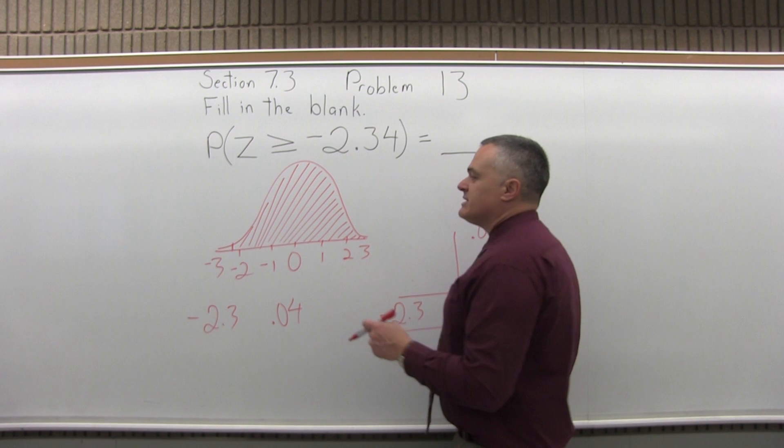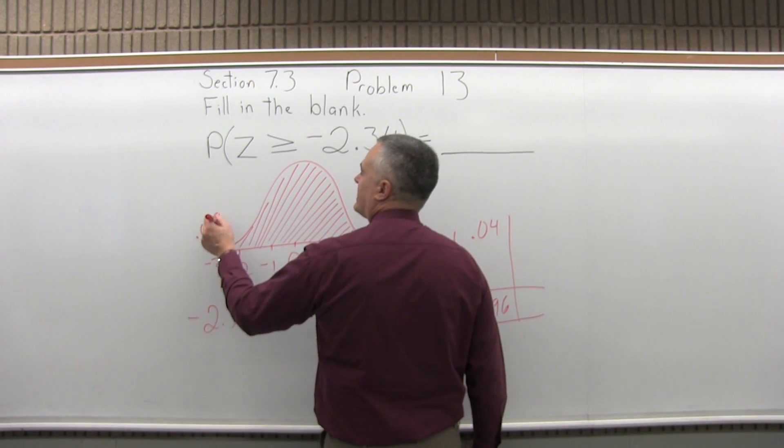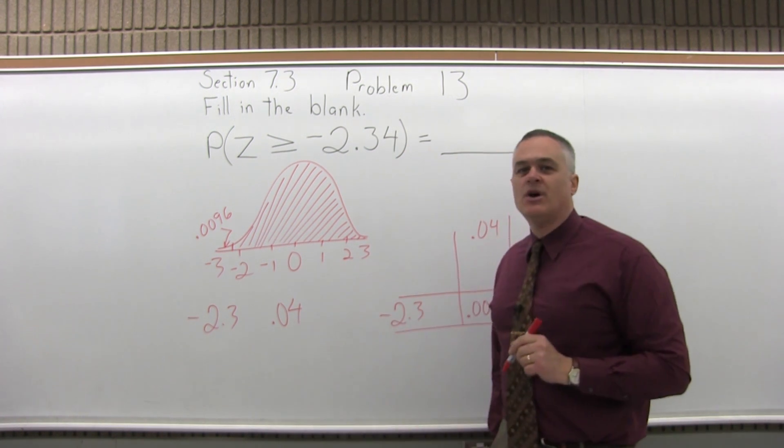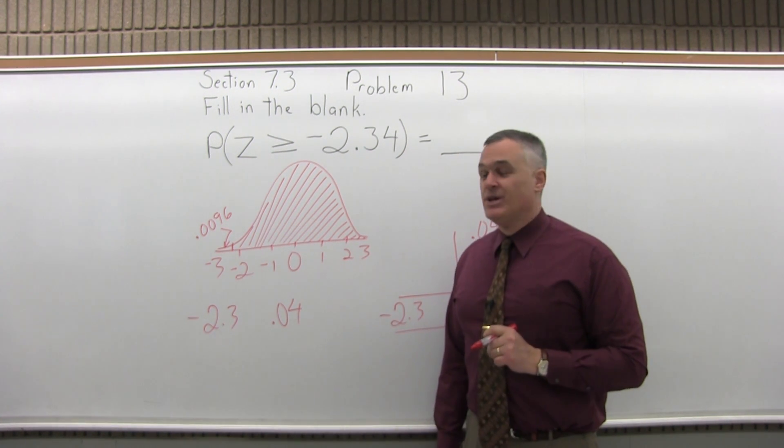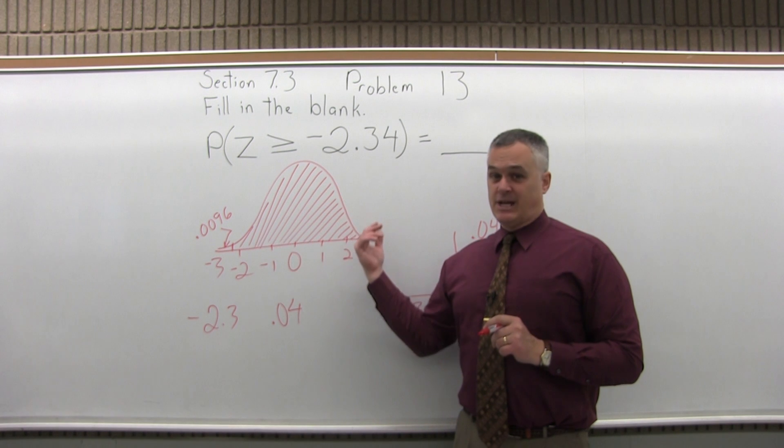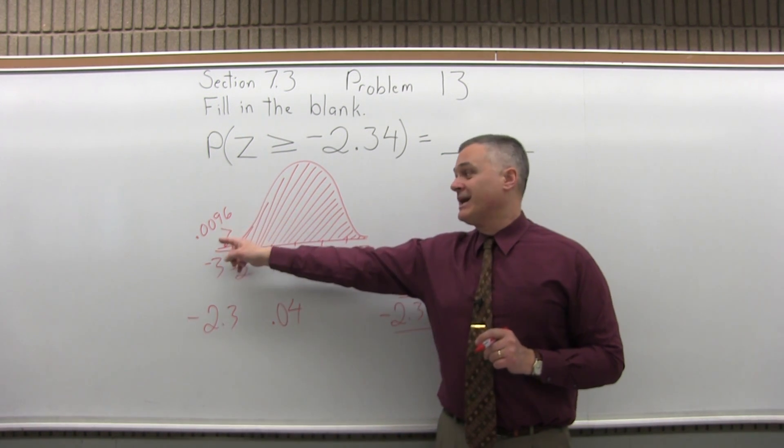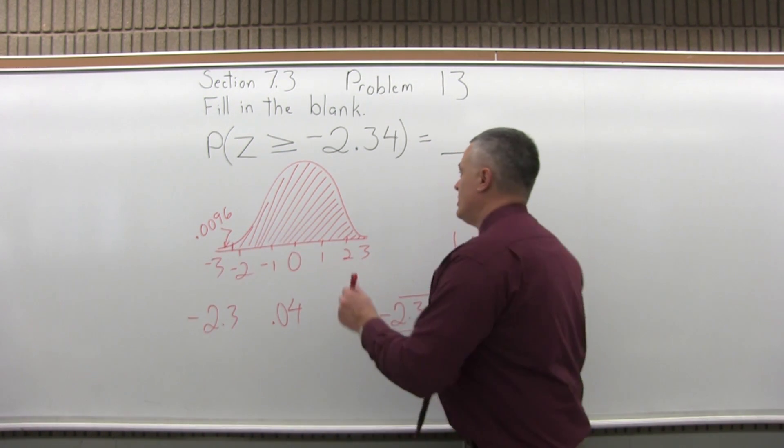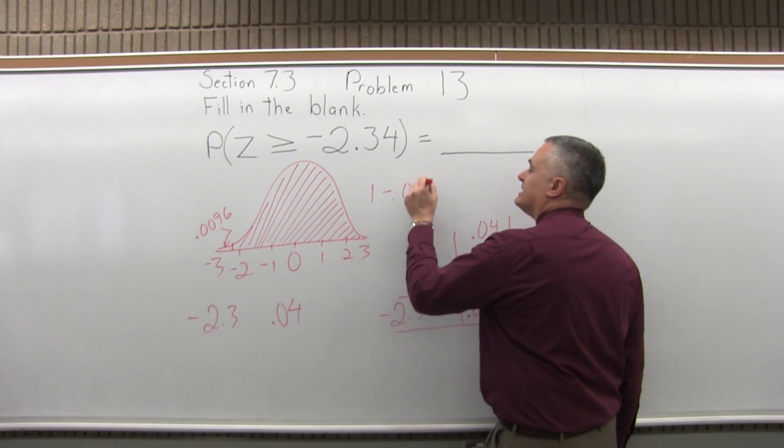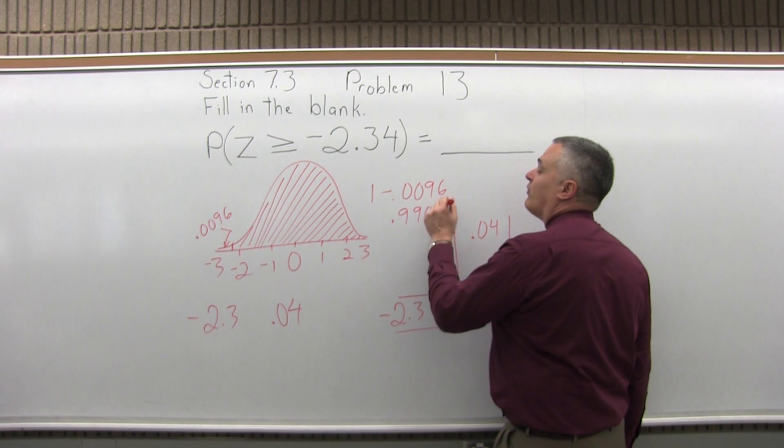Now that 0.0096 is not the answer. The 0.0096 is the amount of area for that tiny little blank portion on the far left. So we want the other side of that, so we have to do 1 minus the chart value. So 1 minus 0.0096 will be 0.9904.